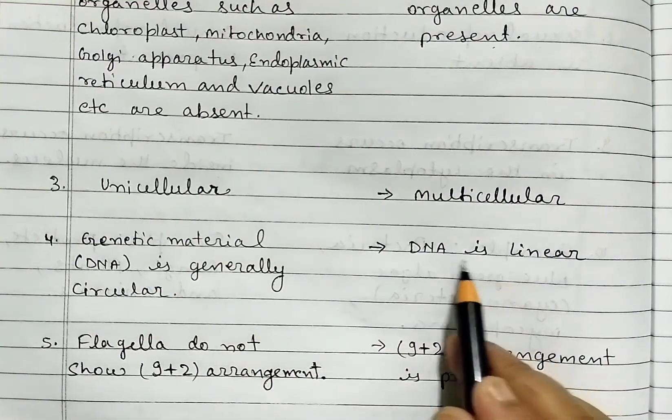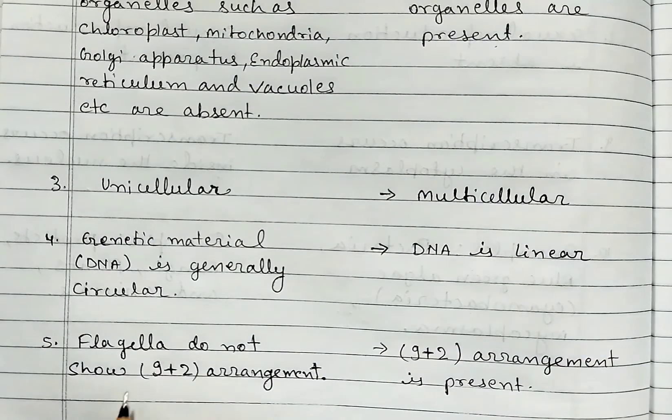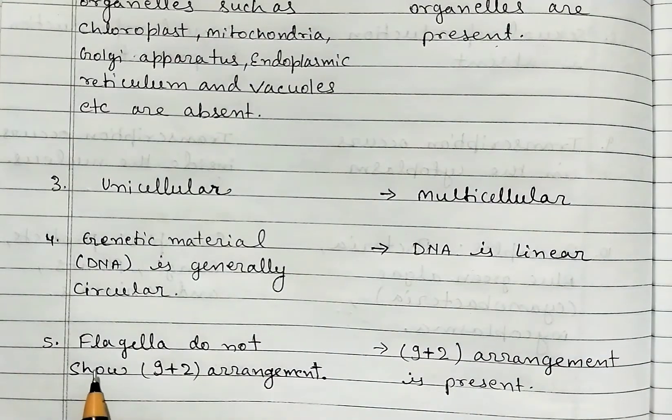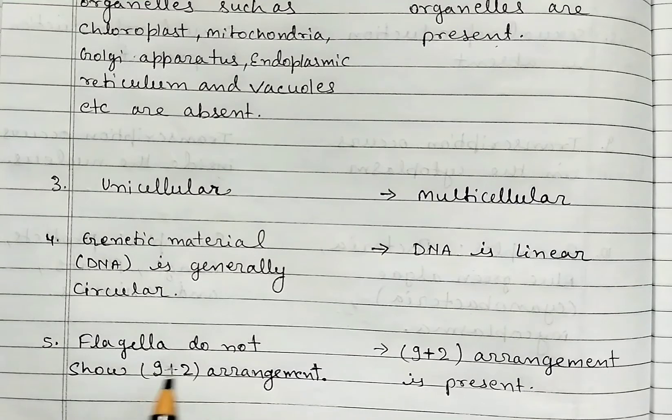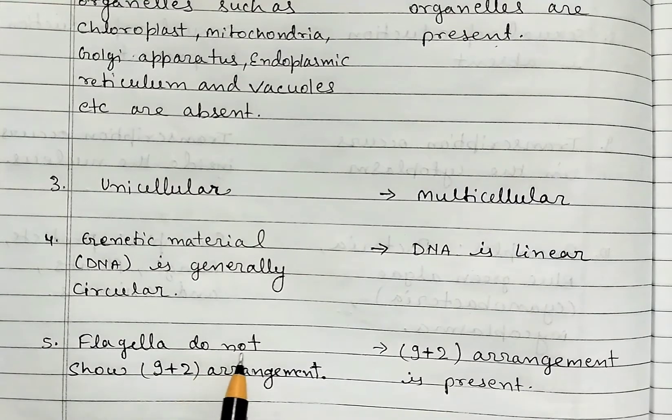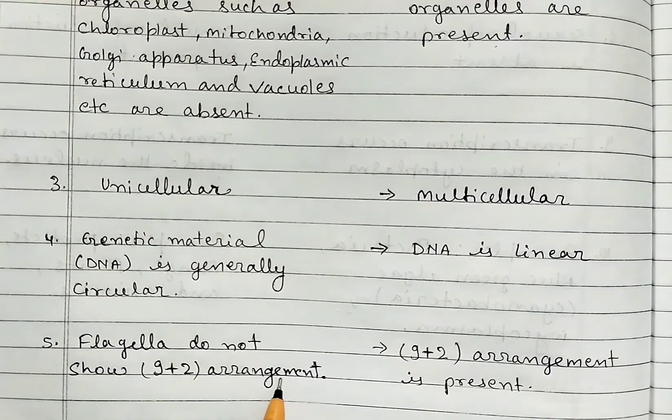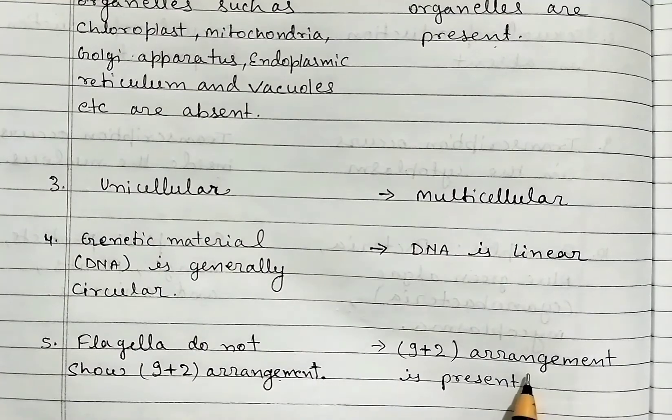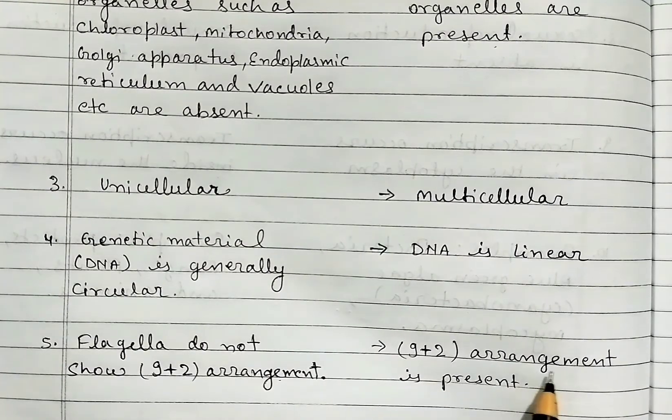Prokaryotic cell flagella do not show the 9+2 arrangement. In eukaryotic cell, 9+2 arrangement is present.